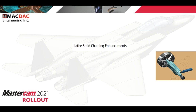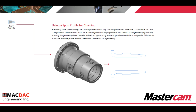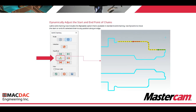Lathe solid chaining enhancements. Previously, lathe solid chaining used a slice profile, which was problematic when the part profile was not cylindrical. Mastercam 2021 lathe chaining now uses a spun profile, which creates profile geometry by virtually spinning the geometry about the selected axis and generating a close approximation of the actual profile. This results in a more accurate profile without the need to add temporary geometry. Additionally, lathe solid chaining now includes the dynamic option: use dynamic to move the start or end point of a selected chain to any position along an edge.